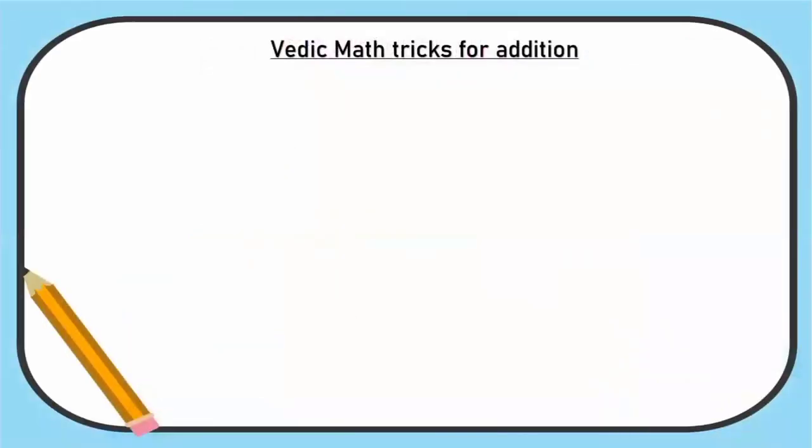First, Vedic Math tricks for addition. Question: 250 plus 467 plus 76 plus 19. Now we can check how to solve this using Vedic Math trick. Break the numbers as per their place value.